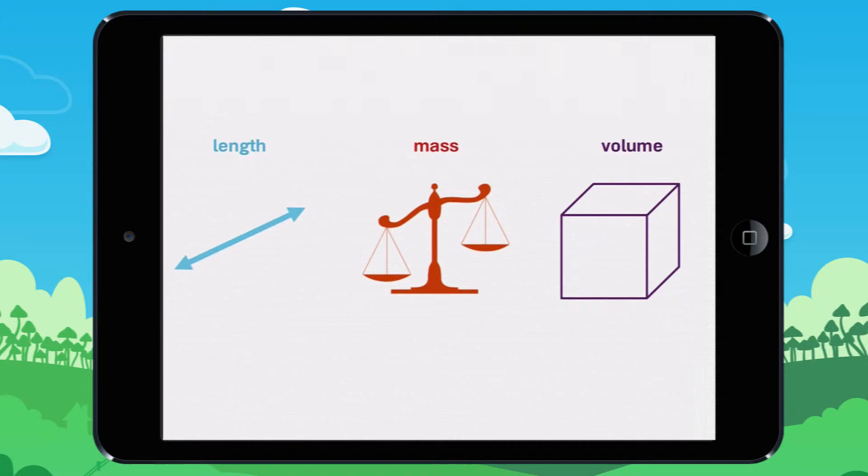Let's talk about the three units of measurement. Length is used to measure how long or how tall something is. Mass is used to weigh things, people, or animals. Volume is used to measure how much liquid something can hold.